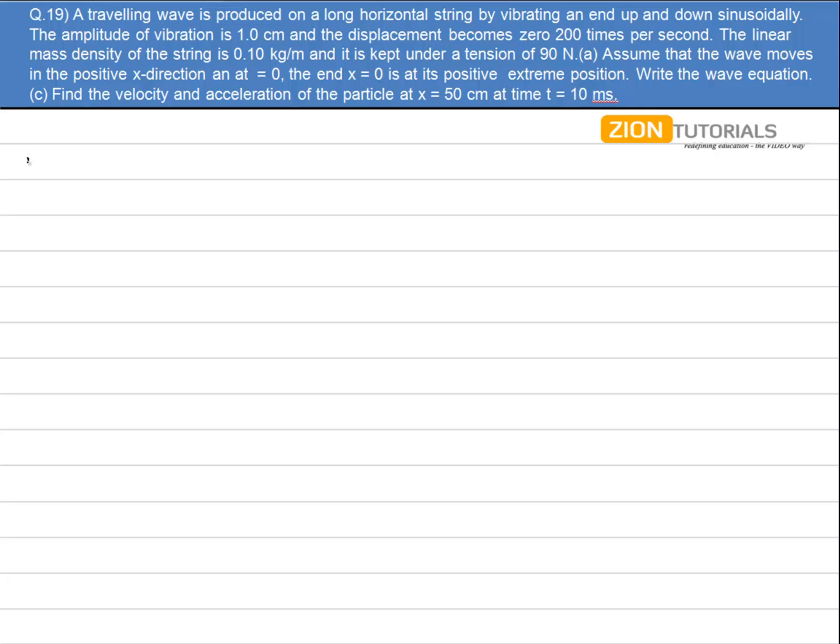Now we have to write the wave equation. The standard form of a wave equation is given by y = A sin[ωt - kx]. I put the minus sign in between because the wave is traveling in the positive x direction. Now we have to calculate the value of omega and k first of all.